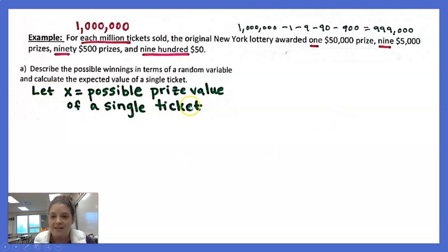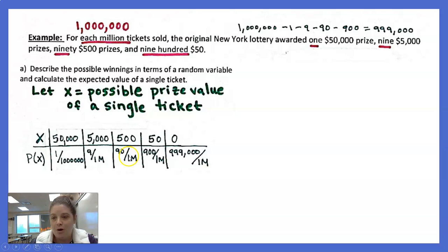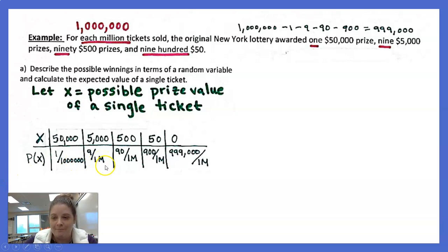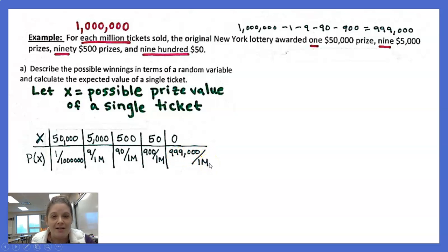So X is defined as the possible prize value of a single ticket. We can write this as a probability distribution. The possible X values are 50,000; 5,000; 500; 50; and also zero, since many people didn't win. The probabilities are 1/1,000,000 for $50,000; 9/1,000,000 for $5,000; 90/1,000,000 for $500; 900/1,000,000 for $50; and 999,000/1,000,000 for zero.